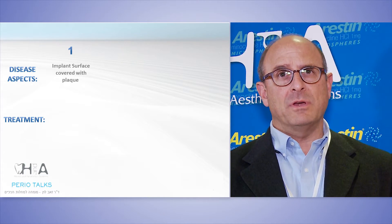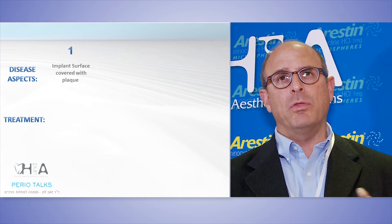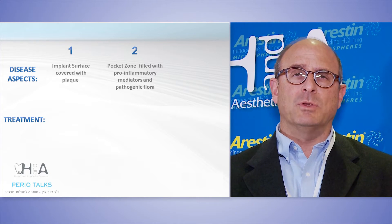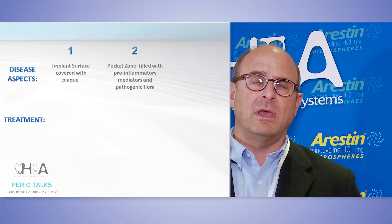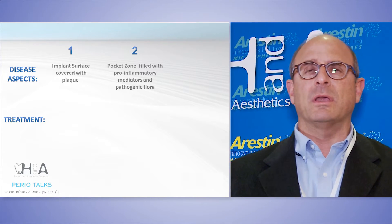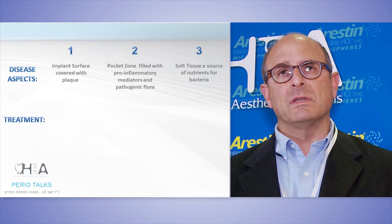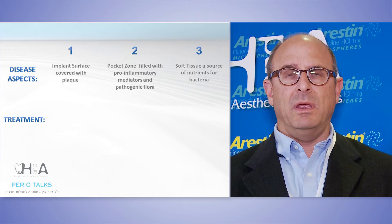When we evaluate peri-implantitis and peri-mucositis cases, we have to look at the disease as having three aspects. One, the surface of the implant, which is a rough surface covered with embedded plaque throughout the microporosities. Two, the pocket zone or the area between the implant and the soft tissue, which is filled with pro-inflammatory mediators and a very pathogenic flora. And three, the soft tissue on the other side, which represents a source of nutrients for the bacteria as well as a source of pro-inflammatory mediators.